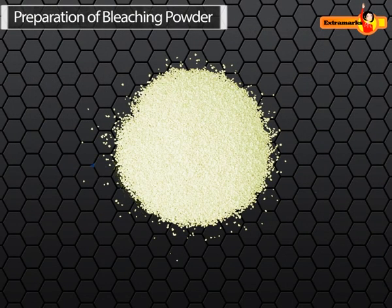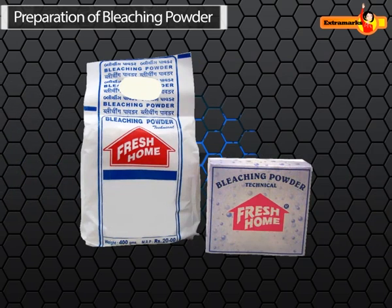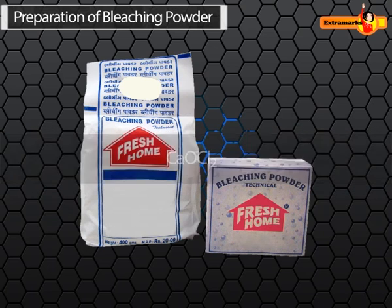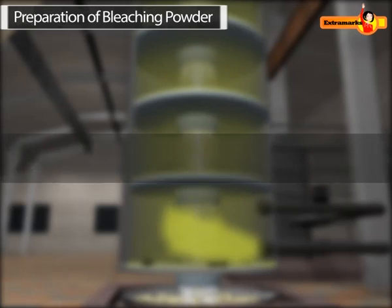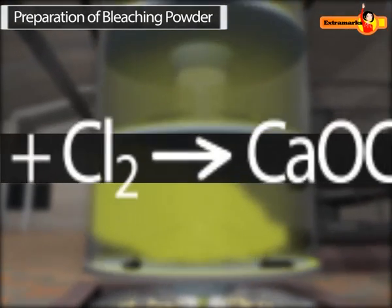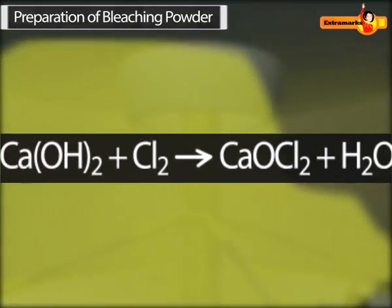Bleaching powder, or calcium oxychloride, is a yellowish powder used in solution form as a bleaching agent. The molecular formula for bleaching powder is CaOCl2. Bleaching powder is prepared on a large scale by passing chlorine gas through a solution containing calcium hydroxide in the Bachman's process.